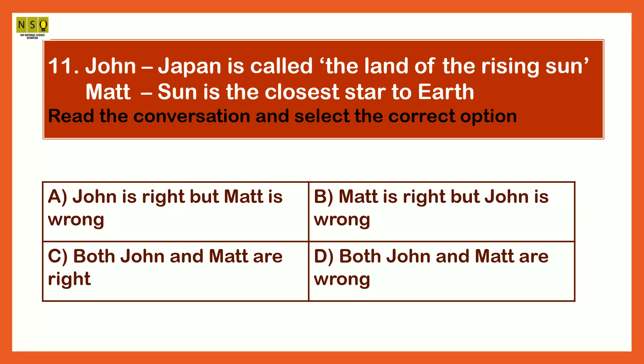John says Japan is called the land of the rising sun. Matt says Sun is the closest star to Earth. Read the conversation and select the correct option. The options are: John is right but Matt is wrong, Matt is right but John is wrong, Both John and Matt are right.